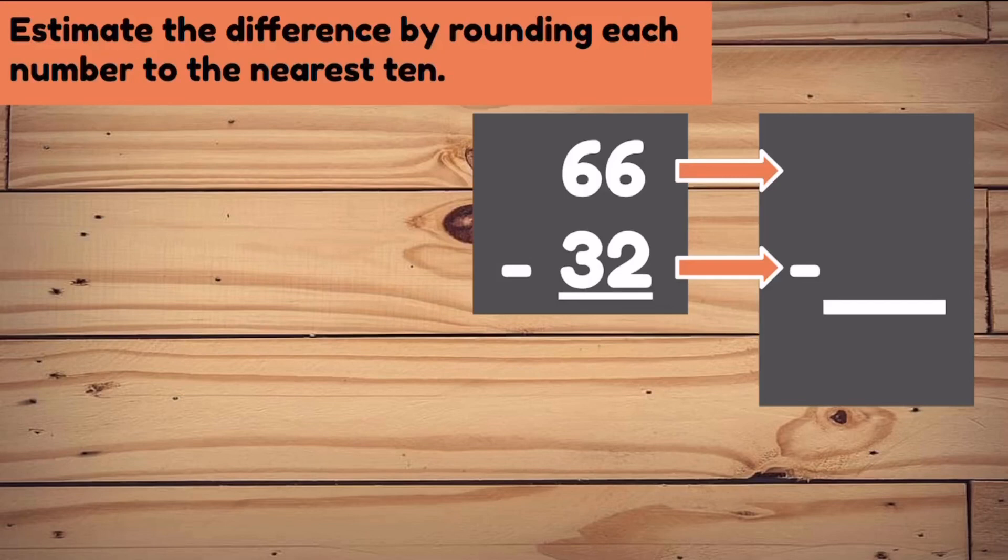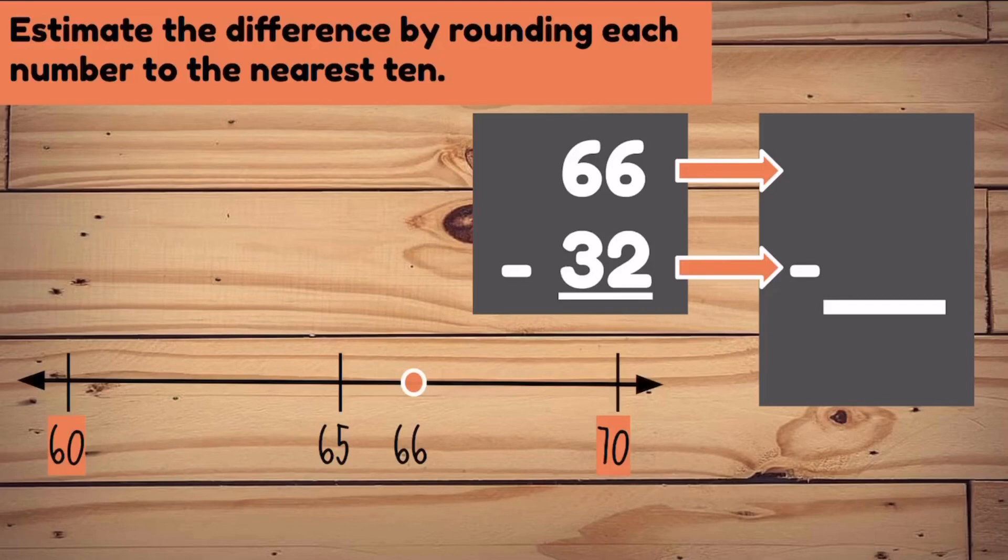66 take away 32. Let's round 66 to the nearest 10. The two 10s surrounding 66 are 60 and 70. Is 66 closer to 60 or 70? It's closer to 70, so 66 will round to 70.